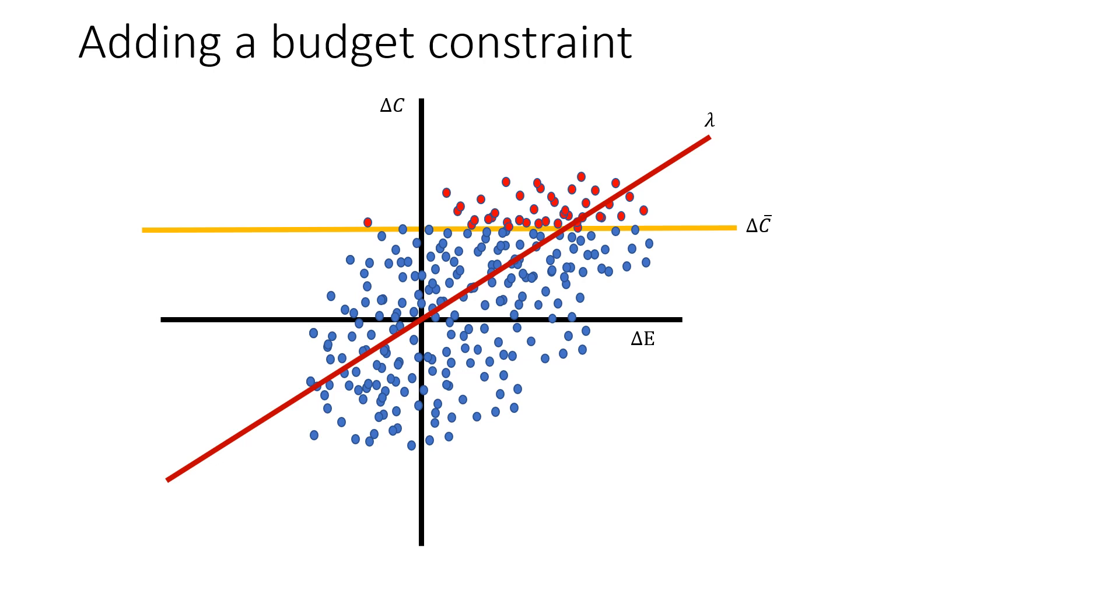What this does is that it eliminates a whole set of points from the get-go. These are colored in red here because these are beyond what we're able to afford, so we can view this new constraint as a refinement of that result.